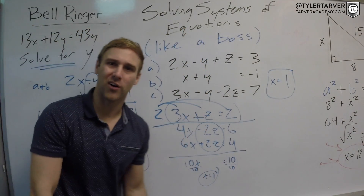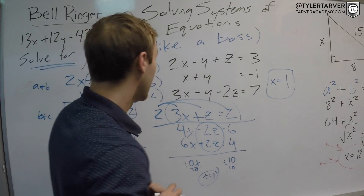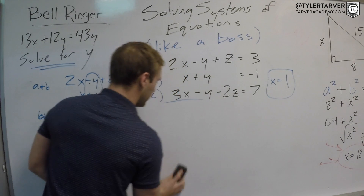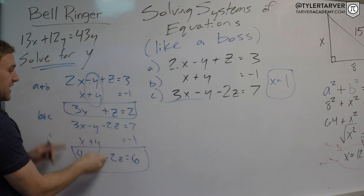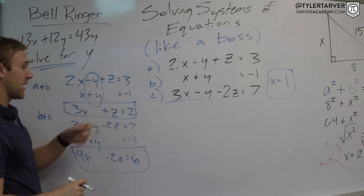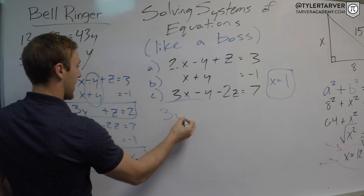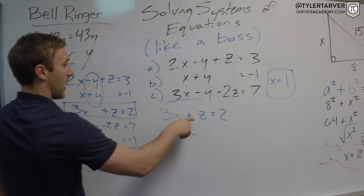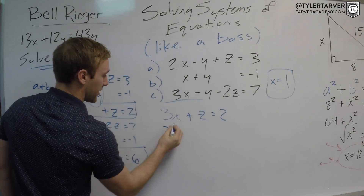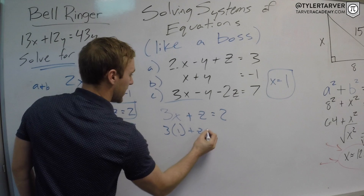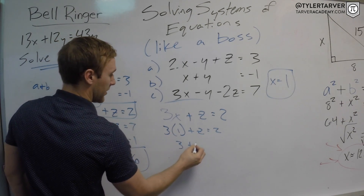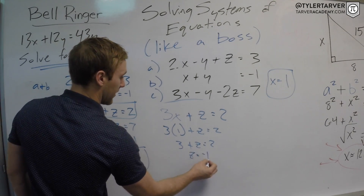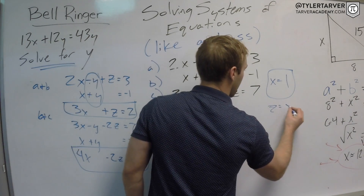We've written so much — you should feel accomplished! Now I can pick either equation and plug x in to find z. Using the top one: 3x + z = 2. Plugging in 1 for x: 3 times 1 plus z equals 2, so 3 plus z equals 2. Subtract 3 from both sides: z equals negative 1.